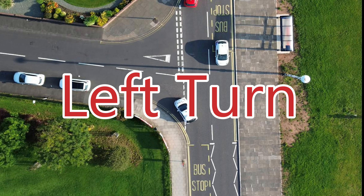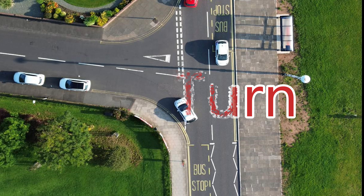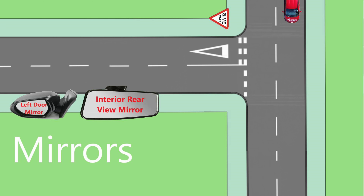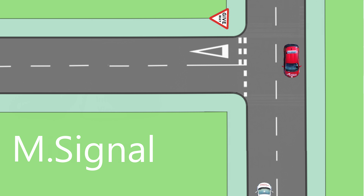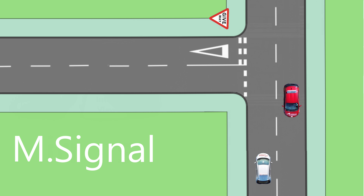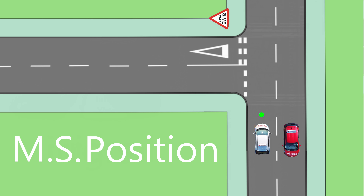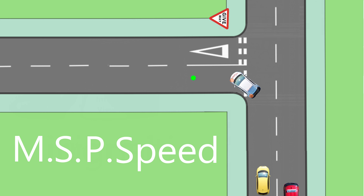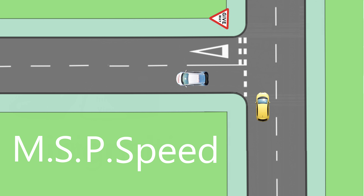Left turn. On approach to the left turn, this is the basic procedure. Mirrors: glance at the rear view, then left door mirror. Signal left. Position: follow the line of the curb. Speed: slow down for the turn.